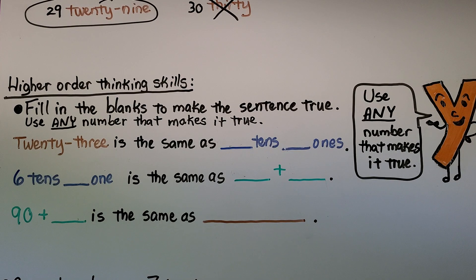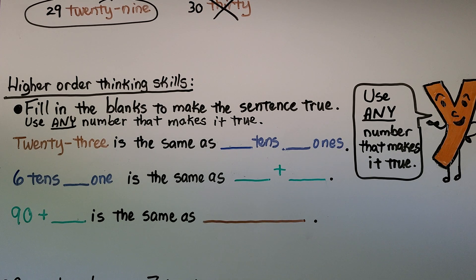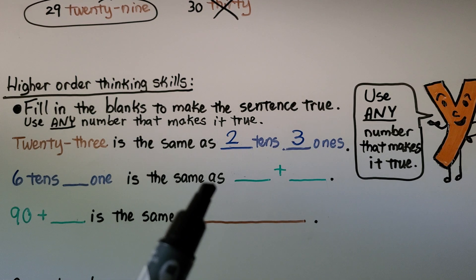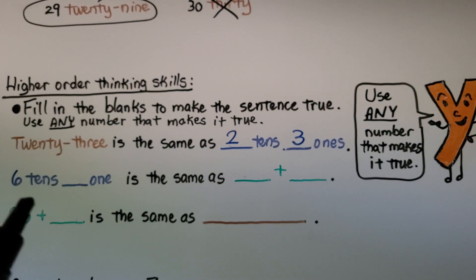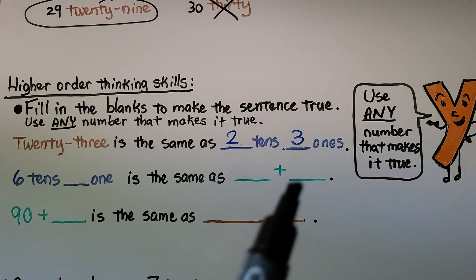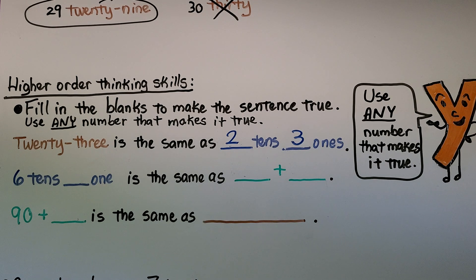We're going to use higher order thinking skills again. We need to fill in the blanks to make the sentence true, and we can use any number that makes it true. We have 23: 23 is the same as blank tens and blank ones. If you said two tens and three ones, you're right.